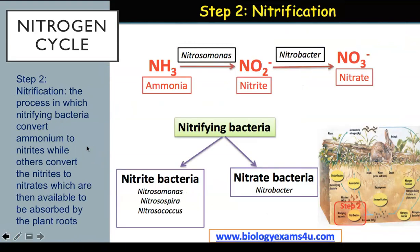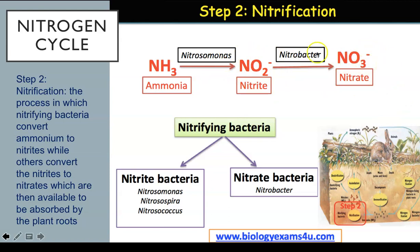Step two of the nitrogen cycle is nitrification — the process in which nitrifying bacteria convert ammonia and ammonium to nitrite, while others convert nitrites to nitrates, which are then available to be absorbed by the plant roots.